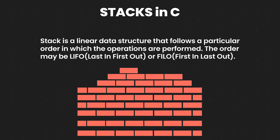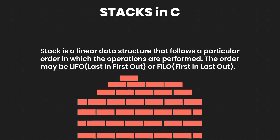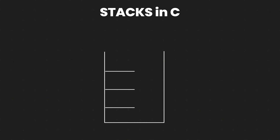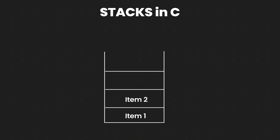So how does a stack look like when it comes to programming? A stack data structure looks something like this. You have the first item at the very bottom, and if you want to add another item, you place it on top of the first item.